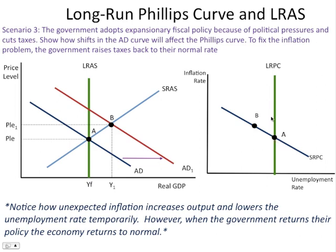To fix the inflation problem, the government raises taxes back to their normal rate, slowing down spending and shifting the AD curve back to the left. On the Phillips curve model, we just slide back along the curve from B to A, returning to long run equilibrium. The key takeaway: a shift in aggregate demand causes movement along the SRPC; a shift in the SRAS curve causes a shift in the opposite direction of the SRPC.